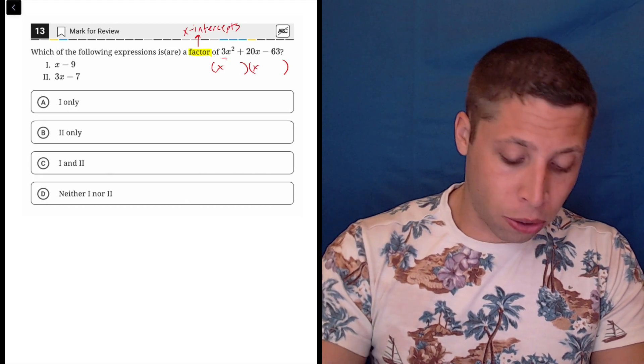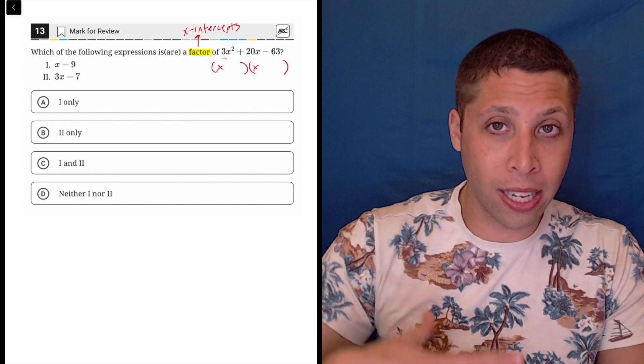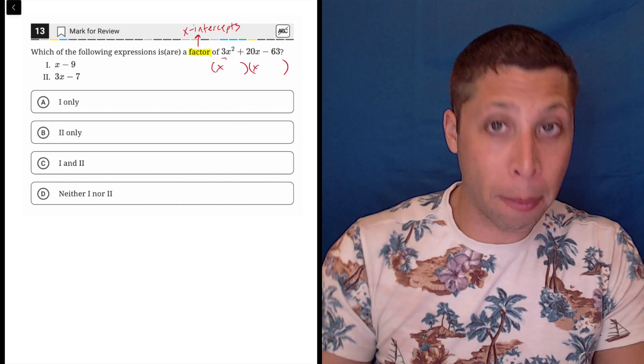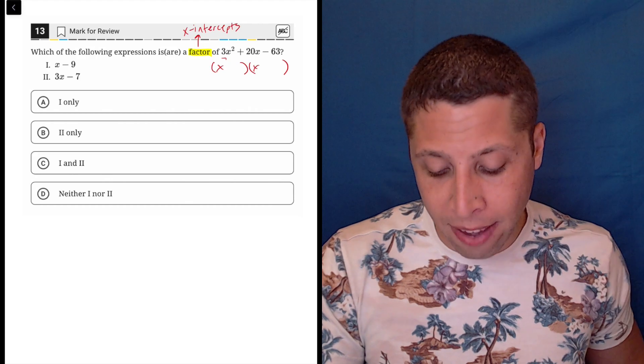But because I associate factor with x-intercepts, I don't need to do any sort of algebra here. I can just look at this parabola and see where it crosses the x-axis and see if that relates to the factors that they gave me.